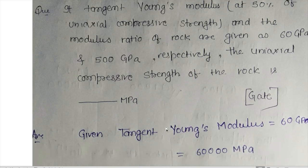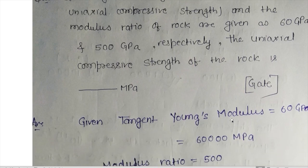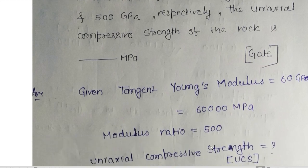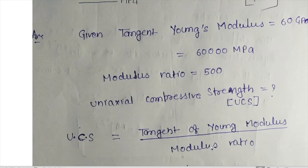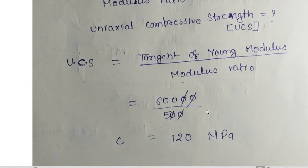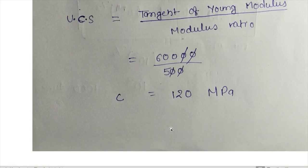We convert GPa to MPa, so 60 GPa becomes 60,000 MPa. The modulus ratio is given as 500. According to the formula, uniaxial compressive strength equals tangent Young's modulus divided by modulus ratio. So 60,000 divided by 500 gives a uniaxial compressive strength of 120 MPa.